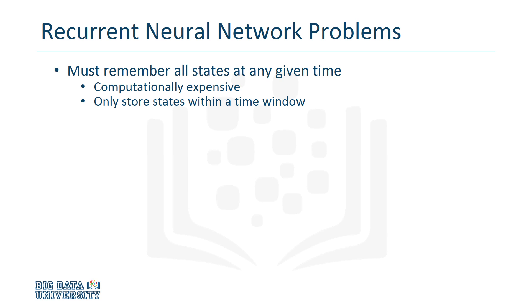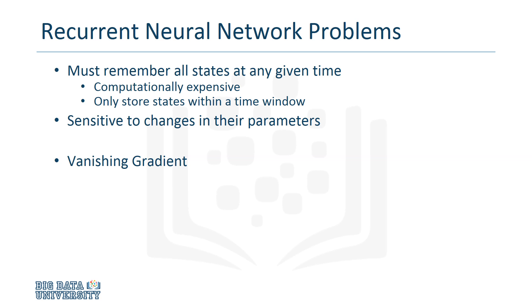Another issue is that recurrent neural networks are extremely sensitive to changes in their parameters. As a result, gradient descent optimizers may struggle to train the net. The net may suffer from the vanishing gradient problem, where the gradient drops to nearly zero and training slows to a halt. It may also suffer from the exploding gradient, where the gradient grows exponentially off to infinity. In either case, the model's capacity to learn will be diminished.